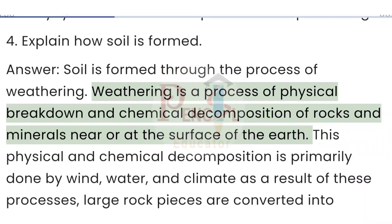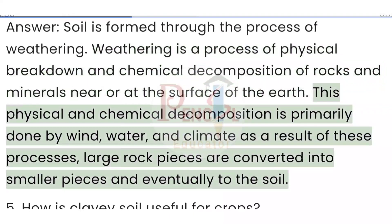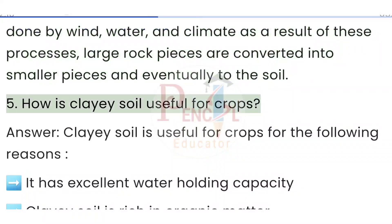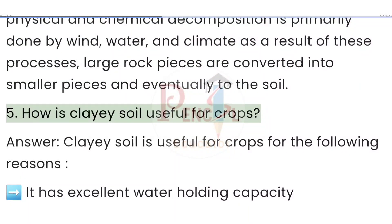Question 4: Explain how soil is formed. Answer: Soil is formed through the process of weathering. Weathering is a process of physical breakdown and chemical decomposition of rocks and minerals near or at the surface of the earth. This physical and chemical decomposition is primarily done by wind, water, and climate. As a result of these processes, large rock pieces are converted into smaller pieces and eventually into soil.